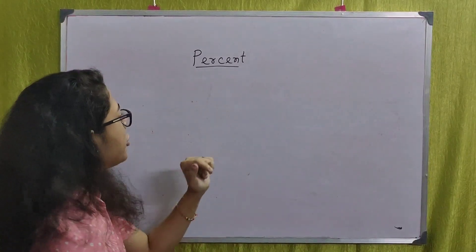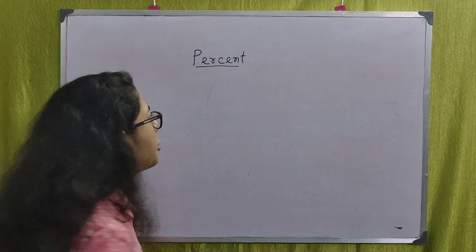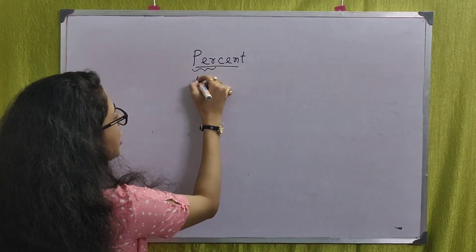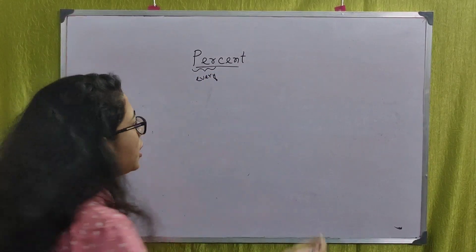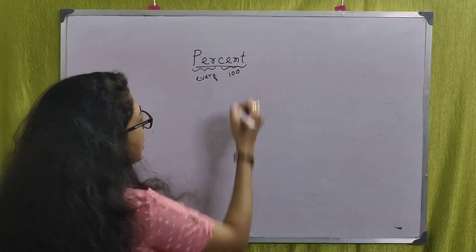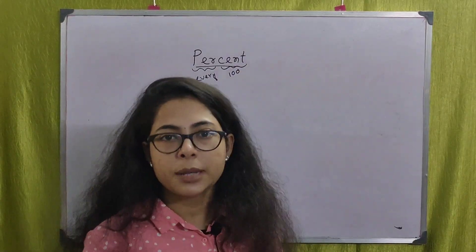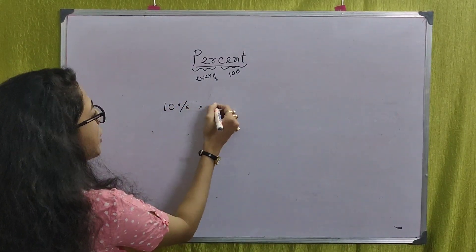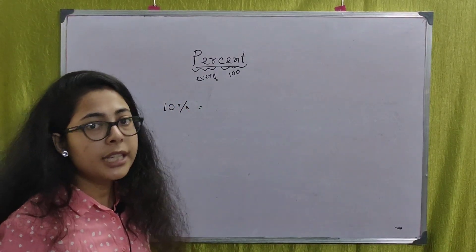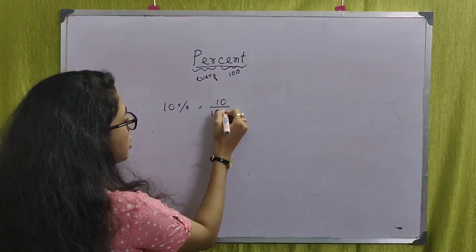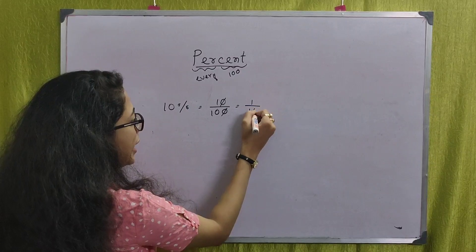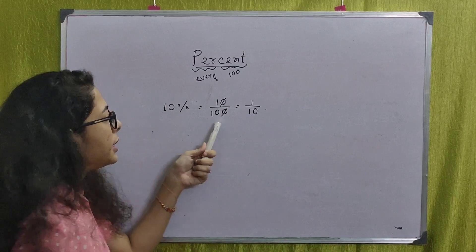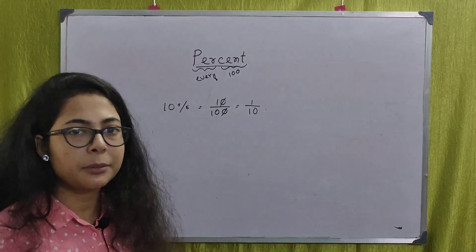What is the percent? We are going to talk about percent. Percent means divided by 100. We are going to talk about the fraction — what is the percent as a fraction? Percent divided by 100. For example, 1 by 10.